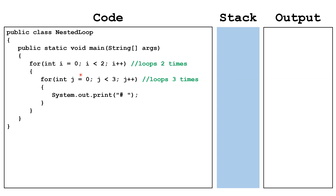So let's trace this out and see what happens. We start by declaring i equal to zero and placing that on the stack. Next, we check: is i less than two? It is, so we continue the outer loop. The first line of code inside the outer loop is the declaration for the inner loop, so we declare j and set it equal to zero. Next, we check: is j less than three? It is, so we continue the inner loop. Inside the body, we print a pound sign and a space to the output. Then we get to the bottom of the inner loop, which means we increment — j++ increments j by one, so j moves up to one.